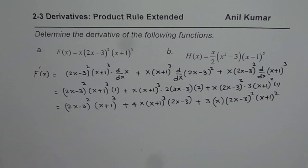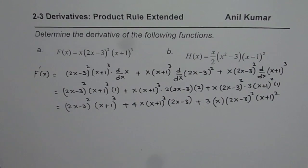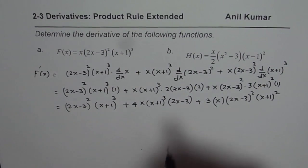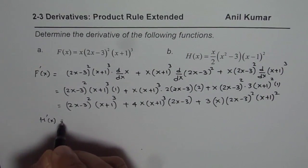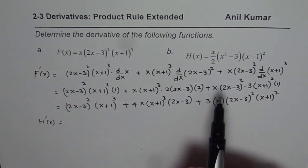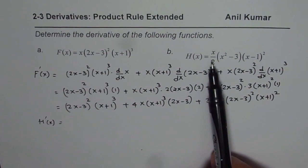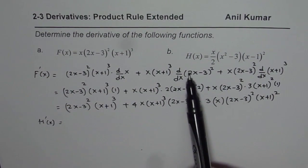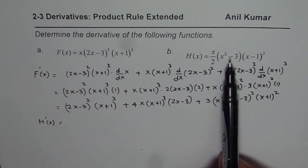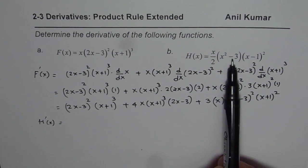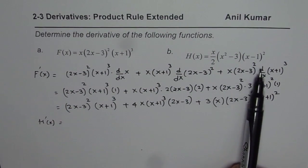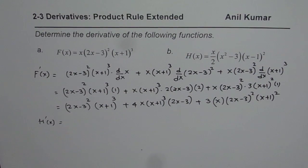So that is the solution for the time being. You can simplify it further, but that is good enough. I hope you have understood the process. Now you find the derivative of the second function — apply the same rule: derivative of the first times the other two, plus derivative of the second times the other two, plus derivative of the third times the other two. When you add them up, you get the derivative of the function. I hope that helps. Thank you.